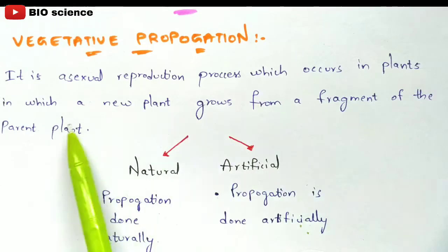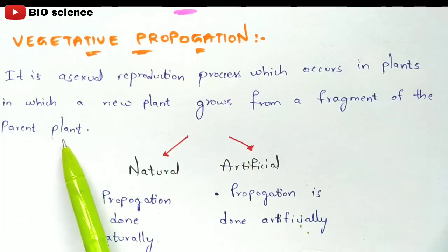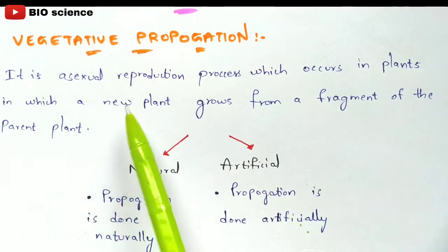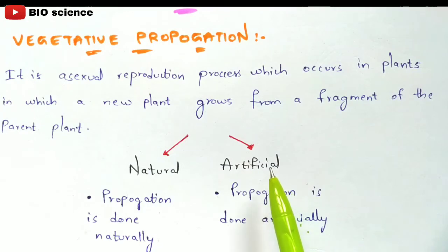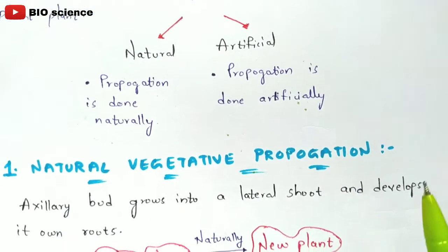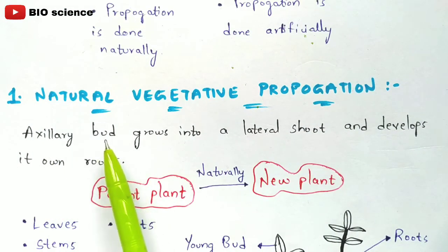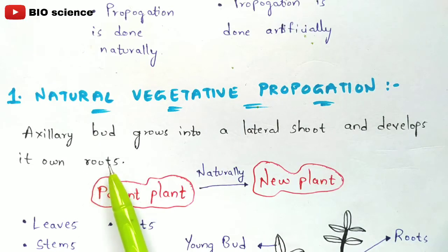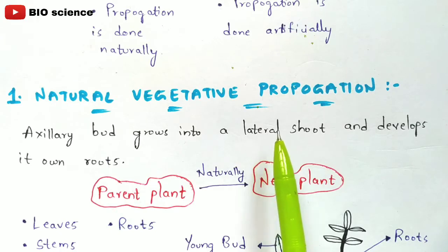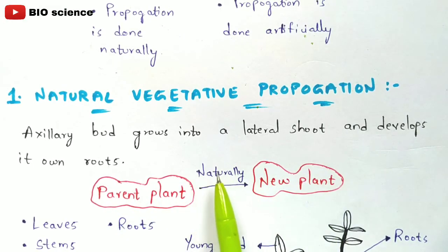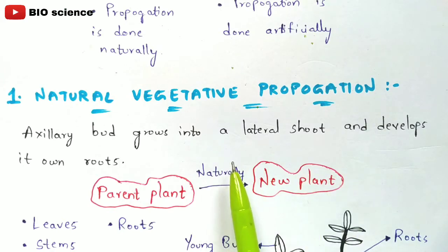In natural vegetative propagation, the parent plant generates a new plant naturally without involvement of human beings. The axillary bud grows into a lateral shoot and develops its own roots. So from the axillary bud, the lateral shoot will be developed, and that shoot will also develop roots on its own, naturally generating a new plant.